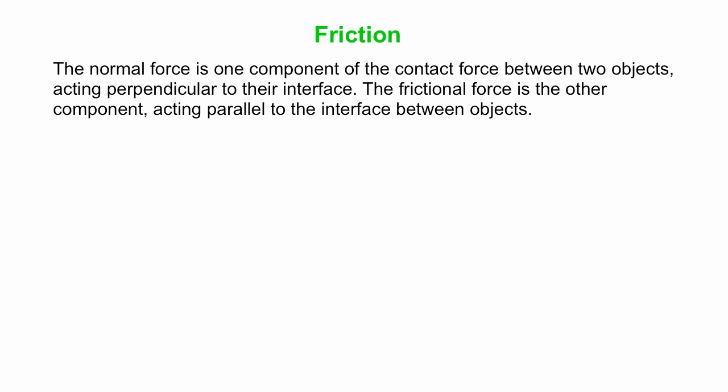Friction arises when there is contact between two objects. A normal force is one component of that contact force, the component perpendicular to the interface. The frictional force is the other component. It acts parallel to the interface between objects.